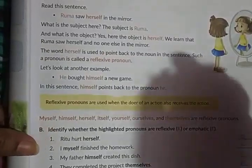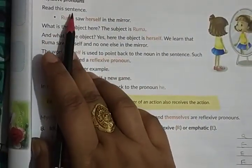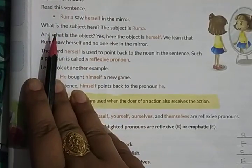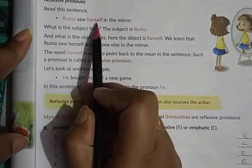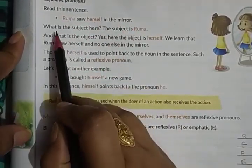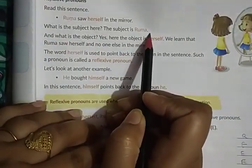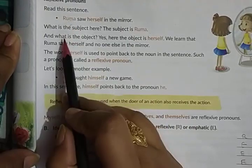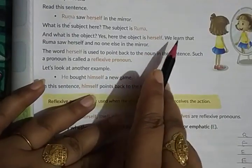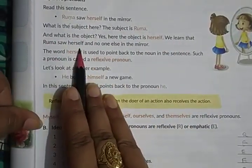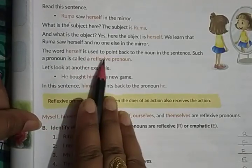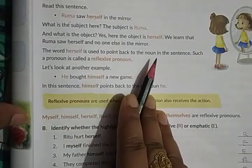Next is reflexive pronoun. Read this sentence: 'Ruma saw herself in the mirror.' Here, 'herself' is reflecting back to Ruma. Ruma is the subject and 'herself' is the object. We learn that Ruma saw herself and no one else in the mirror. The word 'herself' is used to point back to the noun in the sentence — such a pronoun is called a reflexive pronoun.